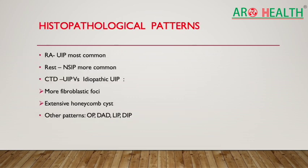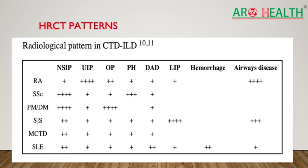On lung function testing, we expect restriction or mixed abnormality if airways are also involved. DLCO is usually reduced, except in combined pulmonary fibrosis and emphysema. Sometimes there is significant reduction in lung volume yet preserved DLCO, mostly when extra-pulmonary restriction occurs due to chest wall involvement as in scleroderma. In rheumatoid arthritis, UIP is the most common histopathological pattern.